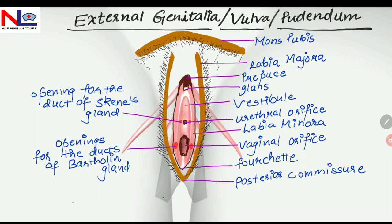Labia majora is present in the lateral aspect, as you can see, and is formed by skin and subcutaneous tissues with adipose fat. They join medially to form a posterior commissure in front of the anus, and are covered with hair follicles similar to Mons pubis, with sebaceous and sweat glands. This structure is similar to the scrotum in the male reproductive system.